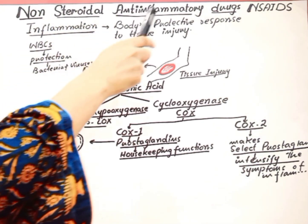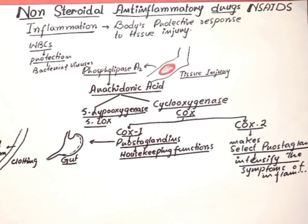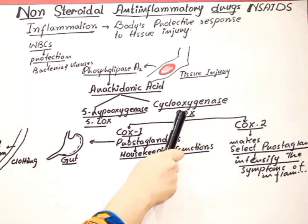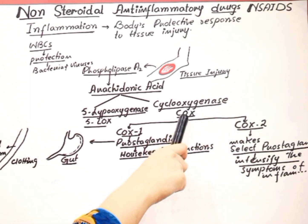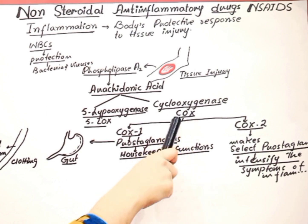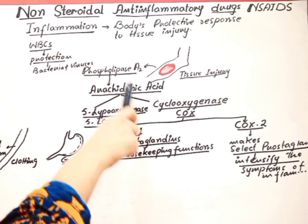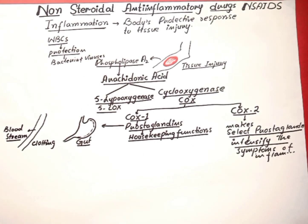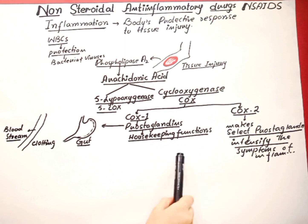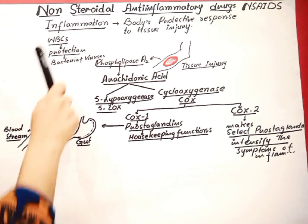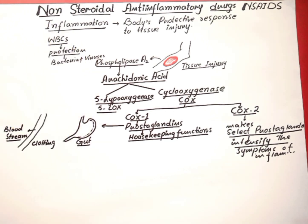These NSAIDs — non-steroidal anti-inflammatory drugs — are the painkillers. They perform their function by inhibiting the COX enzymes. As they inhibit these COX enzymes, arachidonic acid will not form prostaglandins, which are the pain mediators. So we take these drugs in order to relieve pain, and these drugs are actually the painkillers.